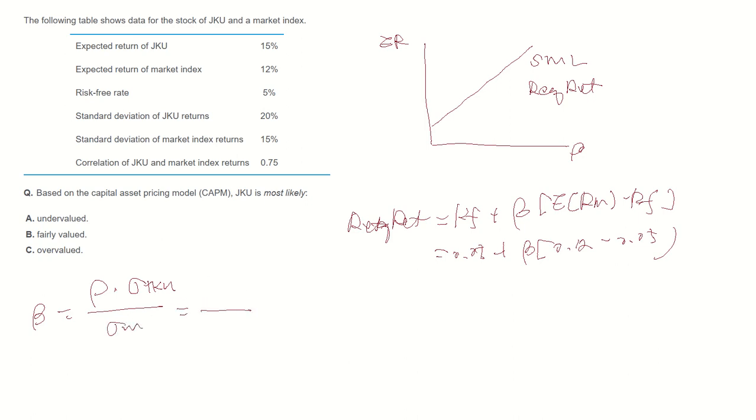The table provided correlation as 0.75 and standard deviation of stock is 20%, 0.2, and standard deviation of market index as 15%, 0.15. So beta of stock becomes 1.